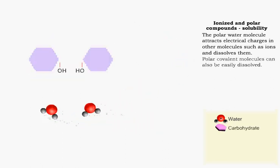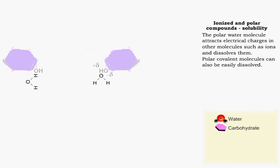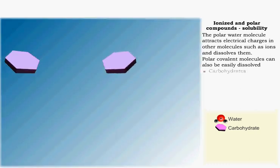Polar covalent molecules like carbohydrates, proteins, nucleic acids, and ATP are easily dissolved.